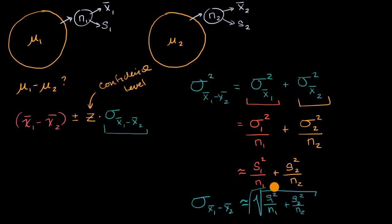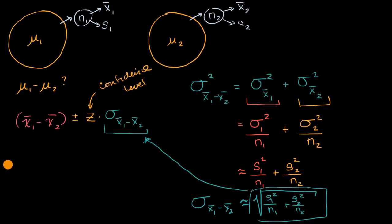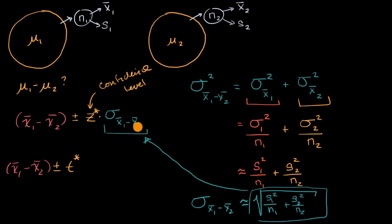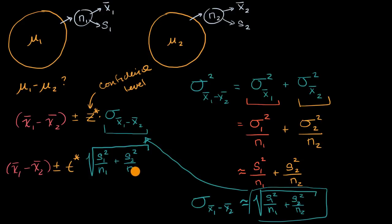The problem is that once we use this estimate, a critical Z value isn't going to be as good as a critical t value. So instead, the confidence interval is x bar sub one minus x bar sub two, plus or minus a critical t star value — because that works better when you are estimating the standard deviation of the sampling distribution of the difference between the sample means — times the square root of s1²/n1 + s2²/n2.